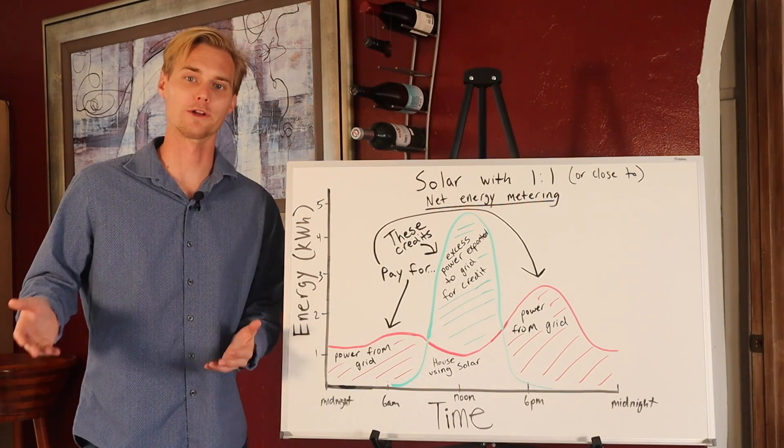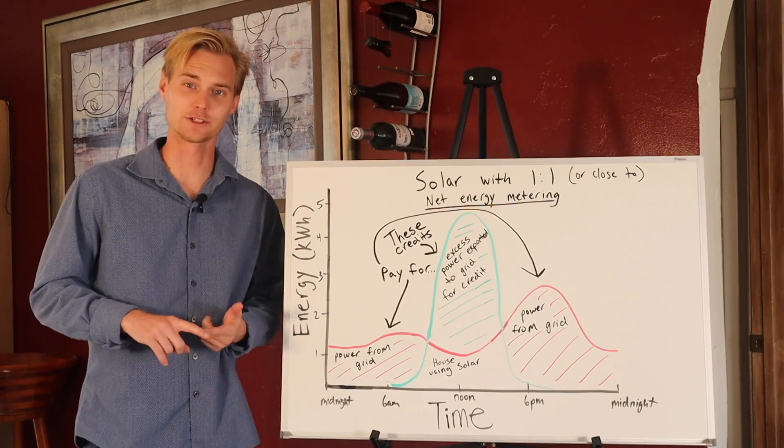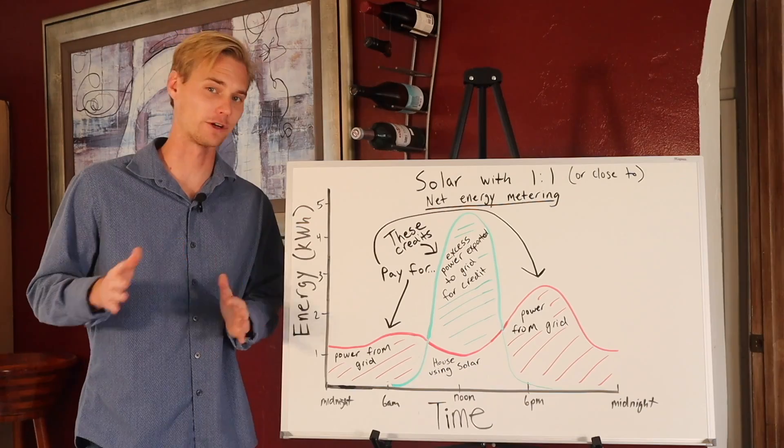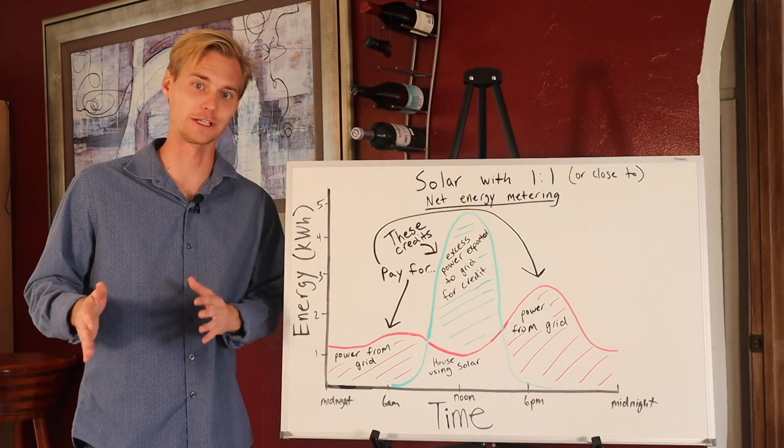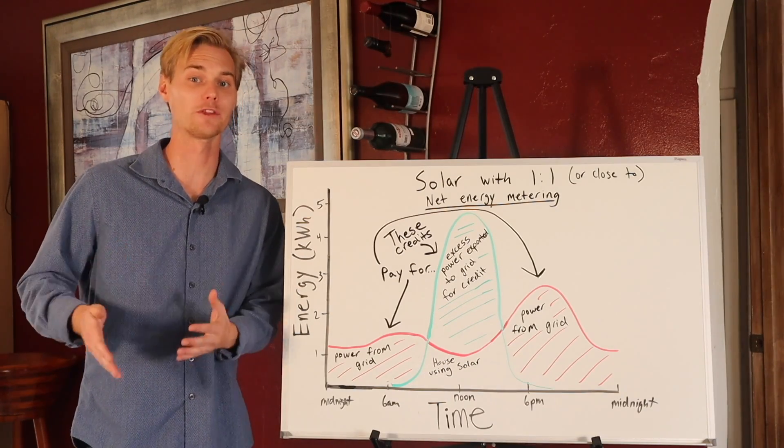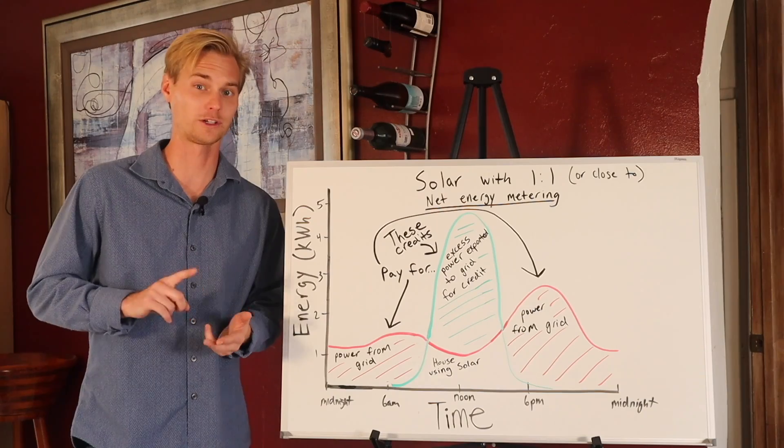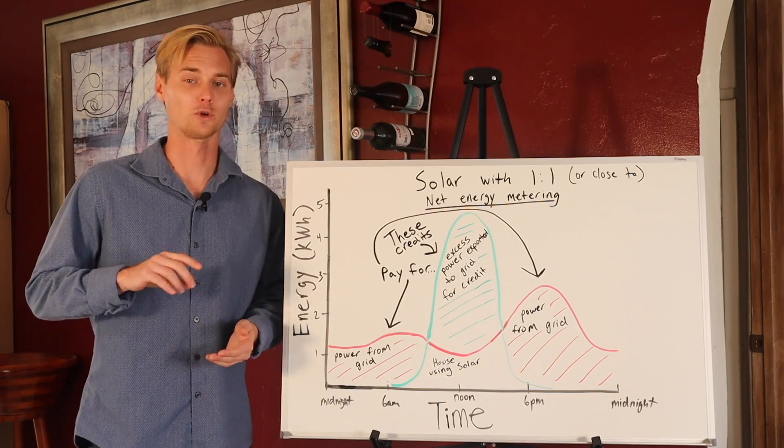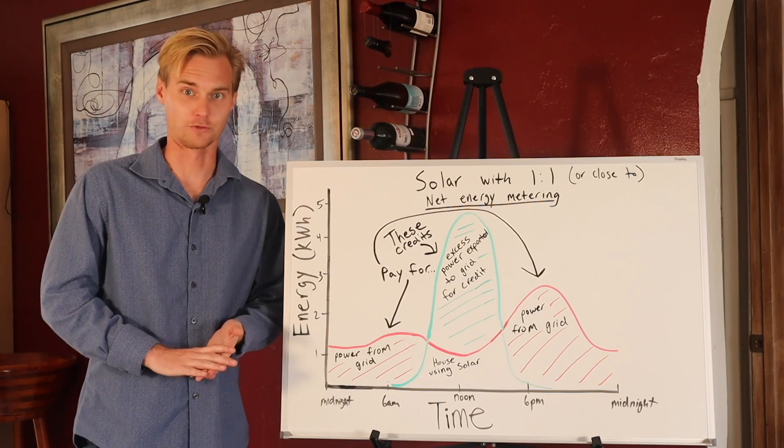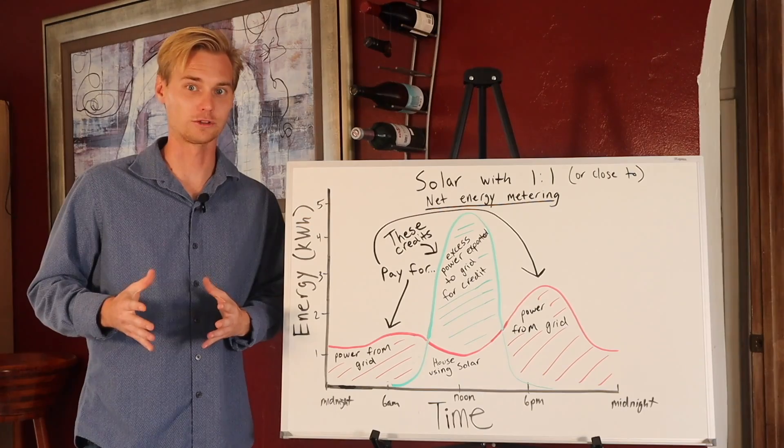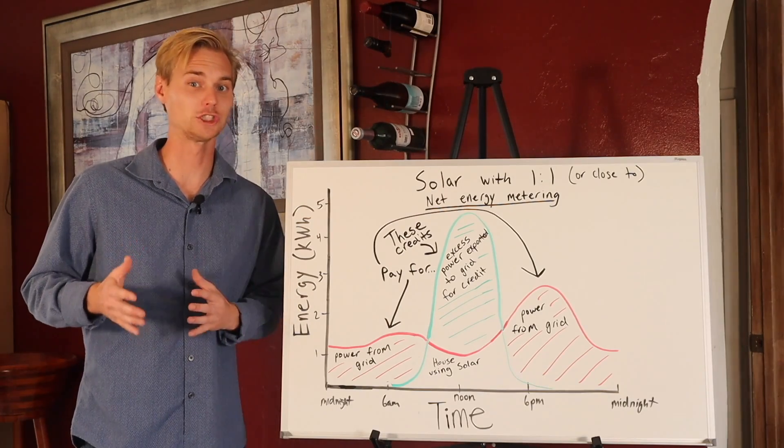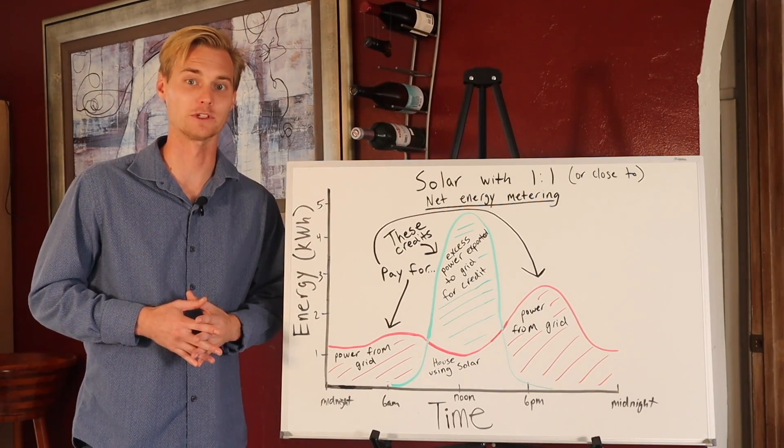Some of the best places with one-to-one net metering agreements are Texas and Florida. Now, not every utility company in these states offer one-to-one net metering, but a lot of them do. So if you're in Florida or Texas, Virginia, North or South Carolina, Pennsylvania, a lot of the East Coast states have really generous one-to-one net metering agreements.